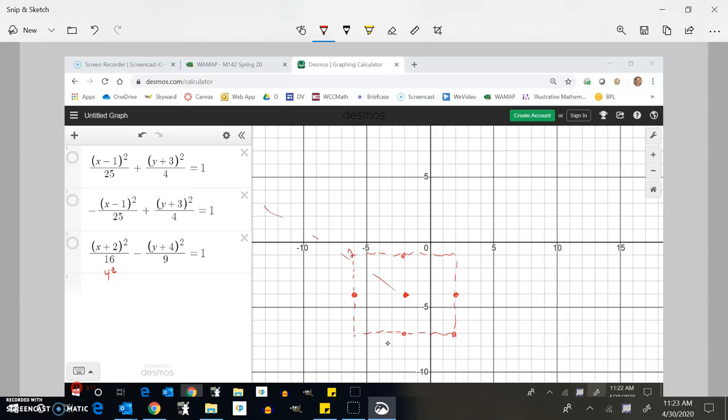Corner to corner, corner to corner. There's my asymptotes for how it grows. And now this is x² minus y². So I know it's going to go left and right.